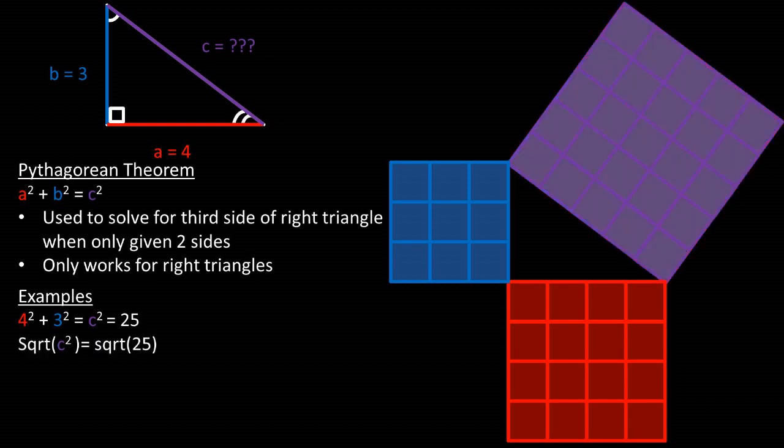Now, if we take the square root of both sides of the equation of c squared equals 25, we get the square root of c squared being equal to the square root of 25. Taking the square root, we are left with the c length being equal to five.